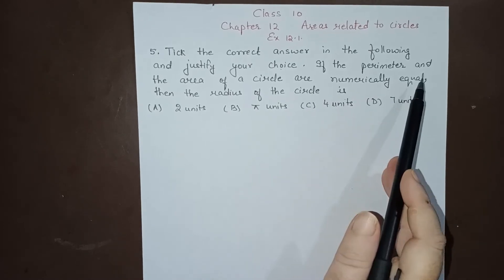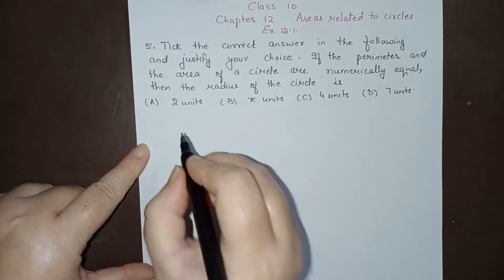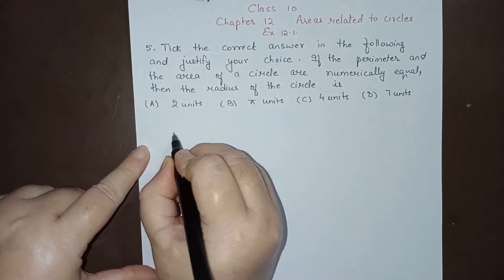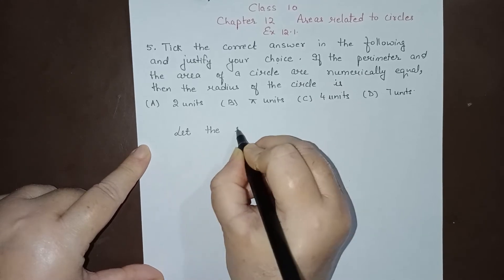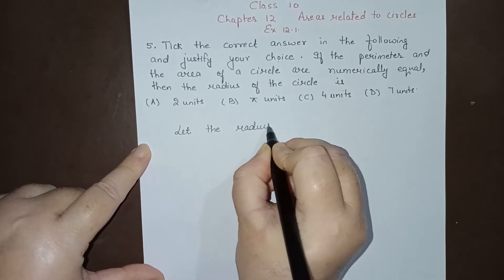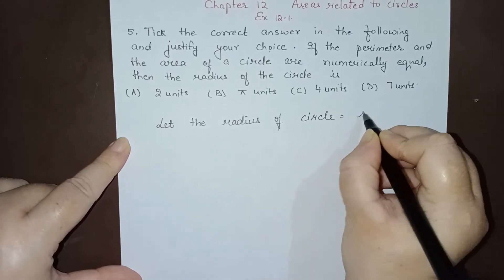are numerically equal, that means they are equal, then the radius of the circle is - so let us see. Let us take the radius of the circle to be r. Let the radius of circle equal r. Now they are